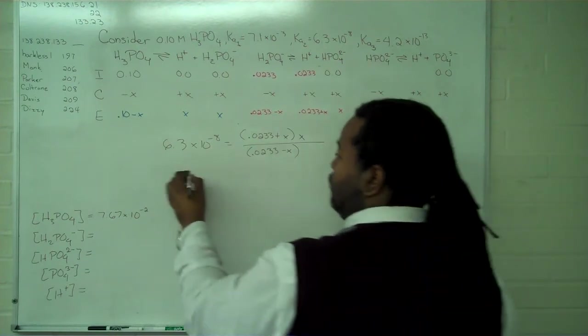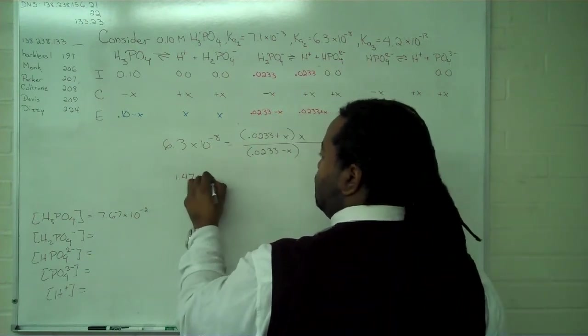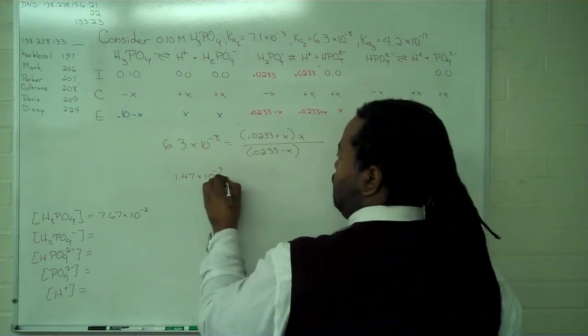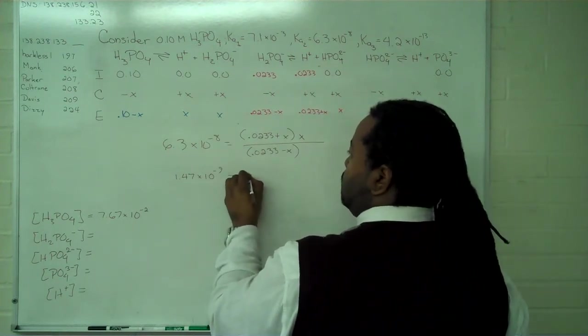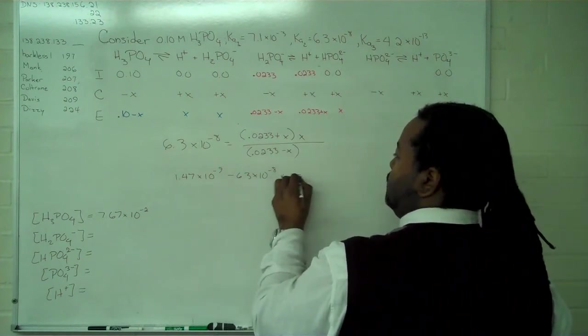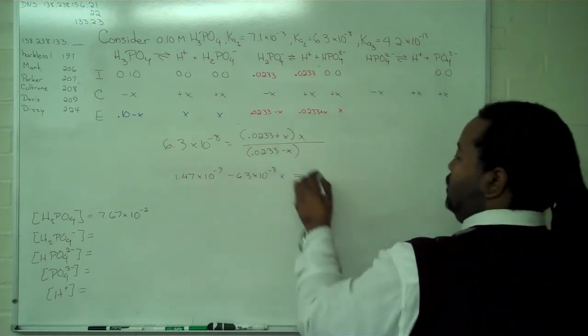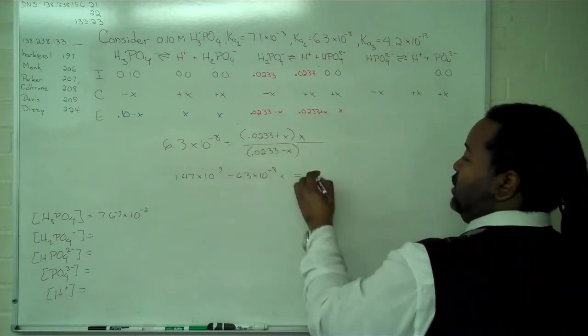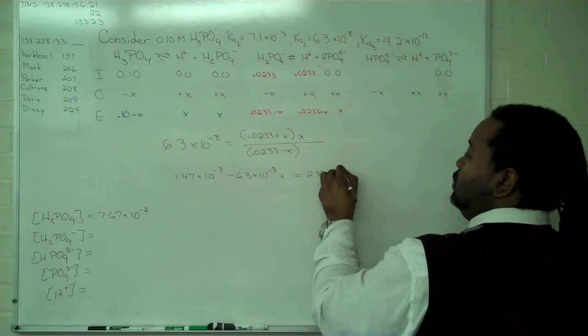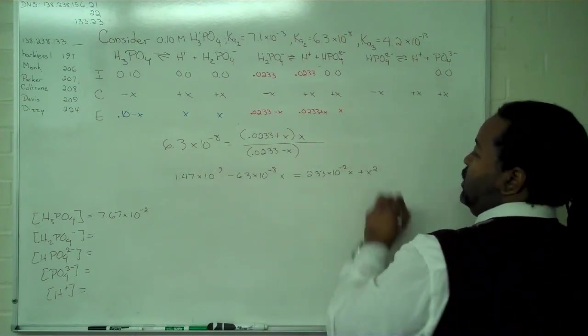And we have 1.47 times 10 to the minus 9 minus 6.3 times 10 to the negative 8 times x. This will equal—I'm going to rewrite this as a number in scientific notation—plus x squared.